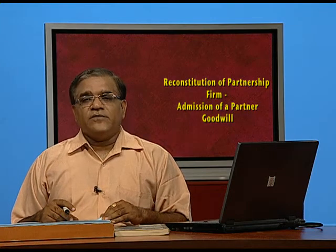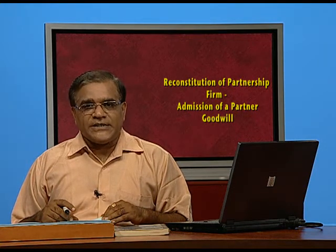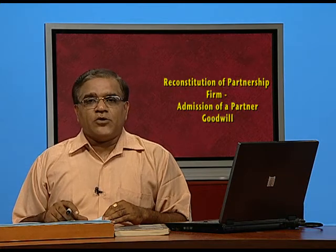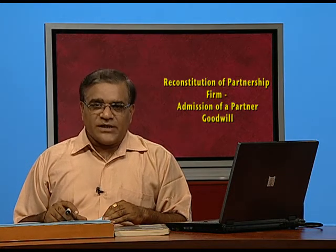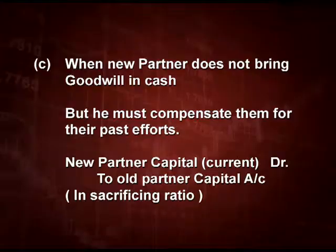The third method is when the new partner is unable to bring in cash for his share of goodwill. In that case, he must compensate the old partners for their past efforts. The entry is: New Partner's Capital or Current Account debit to Old Partners' Capital or Current Account in sacrificing ratio. Under fixed capital system, we use the current account; under fluctuating capital method, we use the capital account.